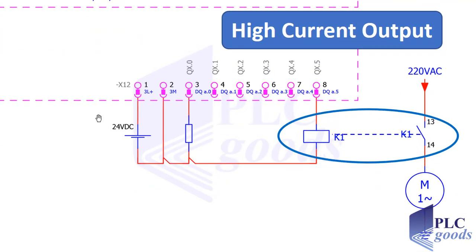For NPN sensors, which provide 0 volts, sourcing wiring must be used. In this course we will use sinking type. Another important point: a PLC can directly turn on an output that requires low current. But for a motor requiring 220 volt AC and high current, a relay or contactor must be used. When the PLC turns on the relay, its contact closes and turns the motor on.